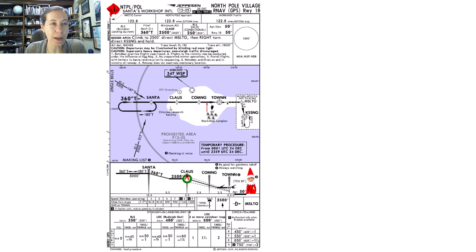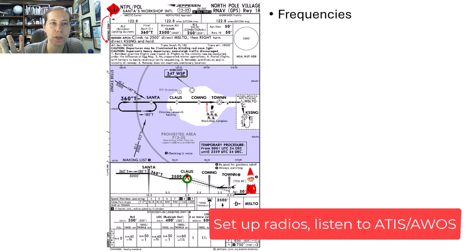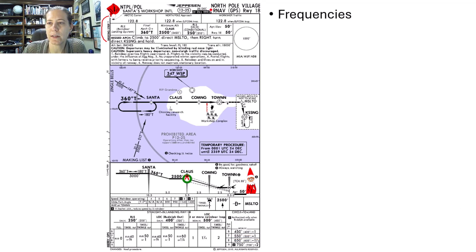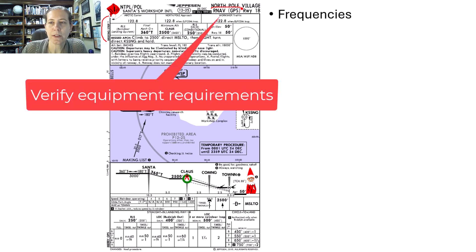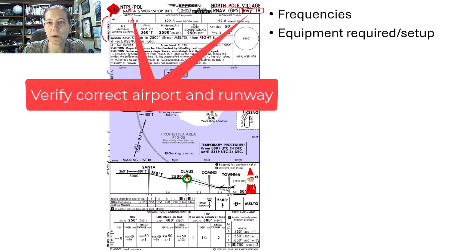When I am doing an approach briefing, the first thing I do is look at the top of the chart. Jeppesen calls it the briefing strip. The briefing strip is this section here at the top and it contains all of our frequencies, which prompts me to set up my radios for how I want them configured during the approach. It also tells me the required equipment. This is an RNAV or GPS approach, so I need a suitable RNAV or GPS system. I'll also verify it goes to the right airport — here, Santa's Workshop International.